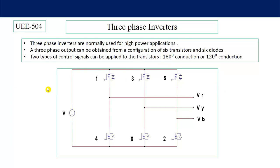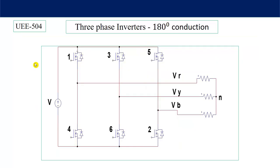In our discussion I will assume that when switching pulses are given to a switch it turns on instantly with no delay time, and when the switching pulses are removed the switch turns off. Based on that, let's start with 180-degree conduction mode. Here a 3-phase star-connected load is used and the six switches are numbered 1, 3, 5, 4, 6, 2 — these numberings are done to ease the generation of switching pulses. The switching pulses are given such that the output voltage will be 120 degrees out of phase.